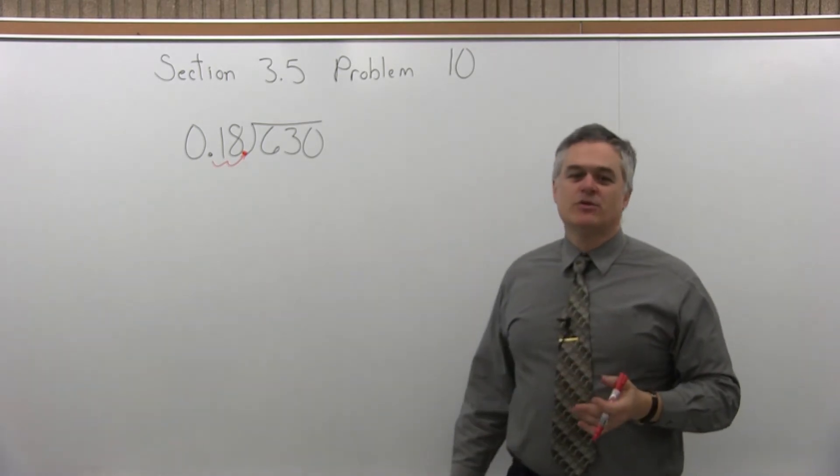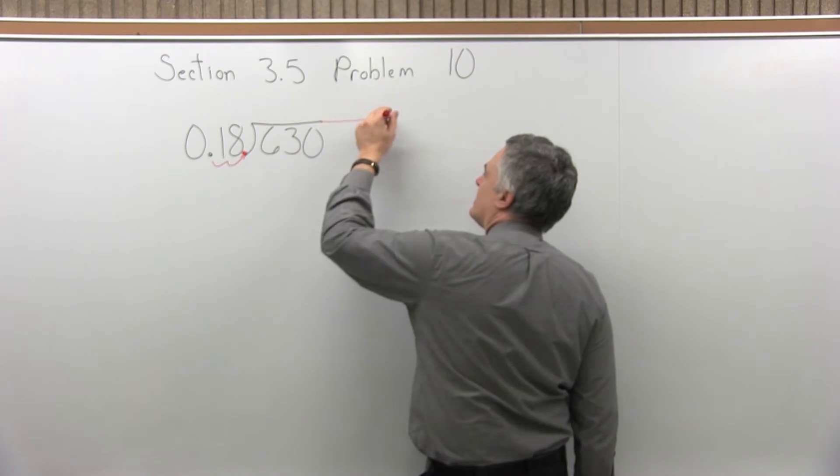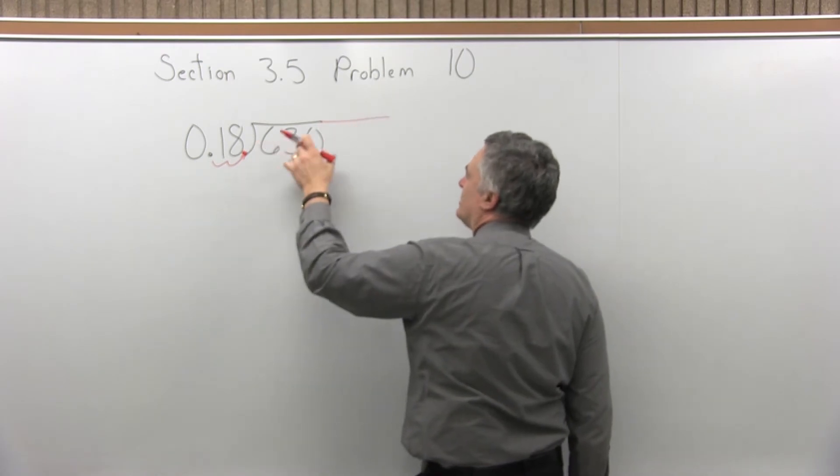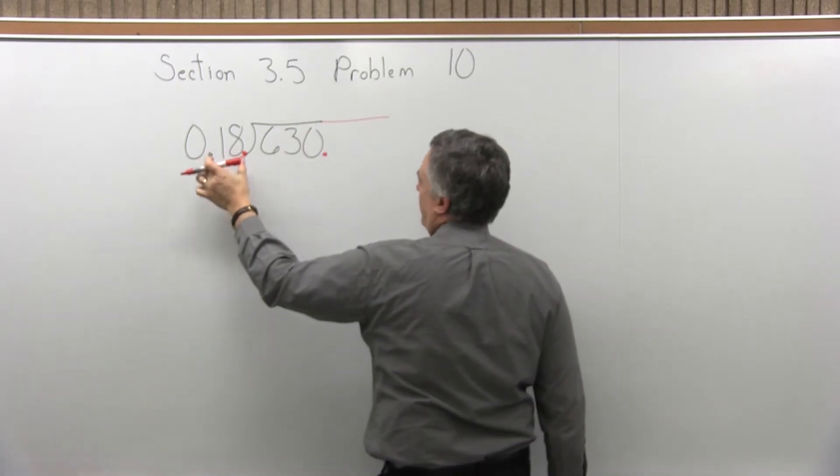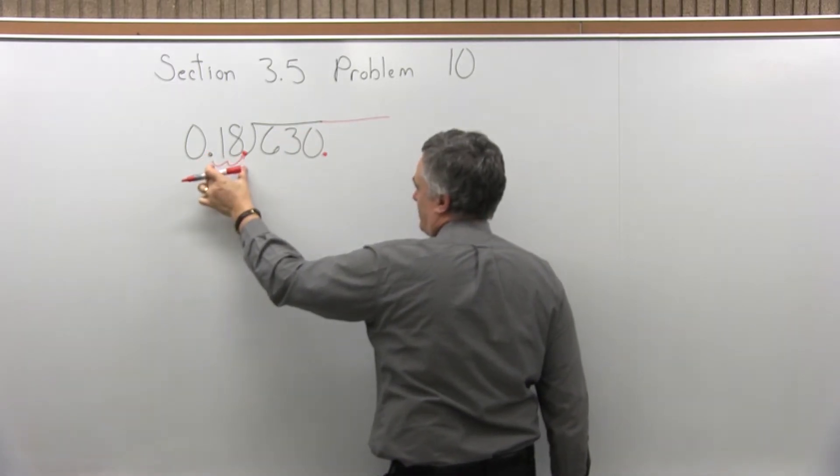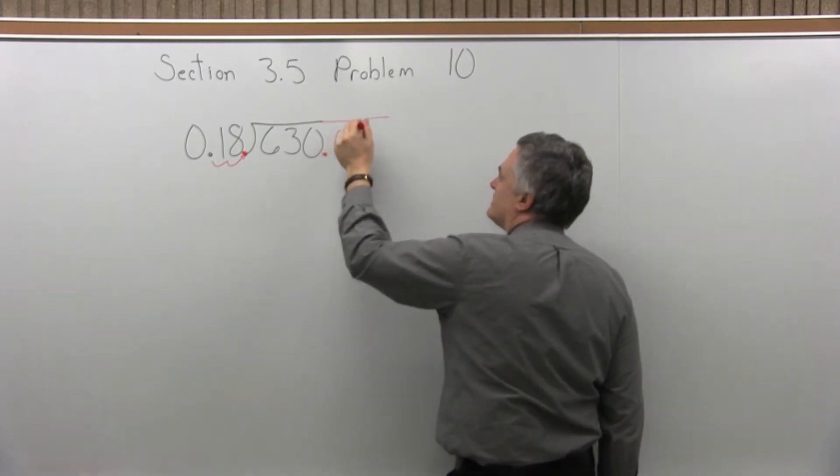As many places as you had to move it for the number in front, you must move it the same number of places for the number under the division symbol, or dividend. The proper name doesn't matter that much. What matters is, I moved it two places for the number in front, I must move it the same number in this problem, two places for the number under.